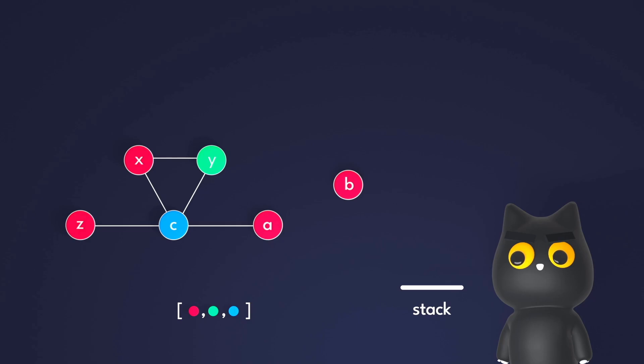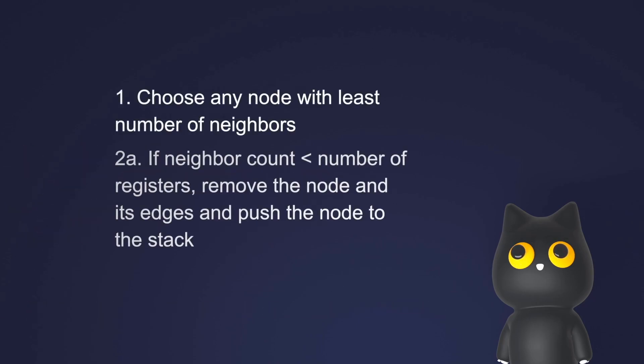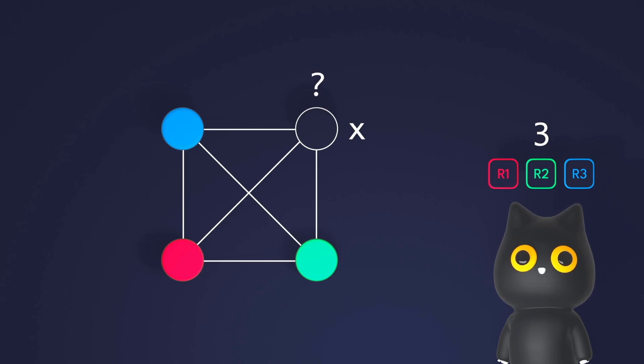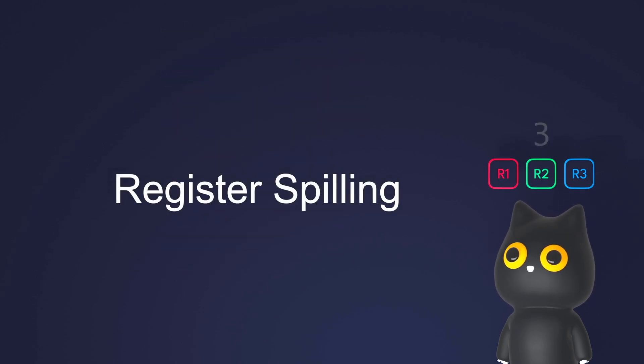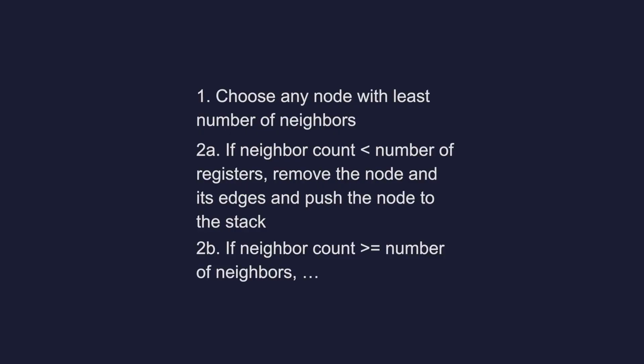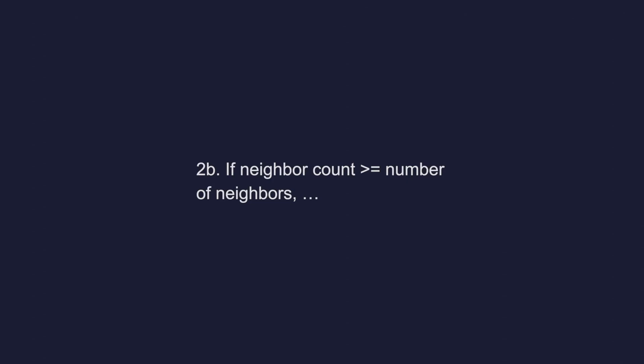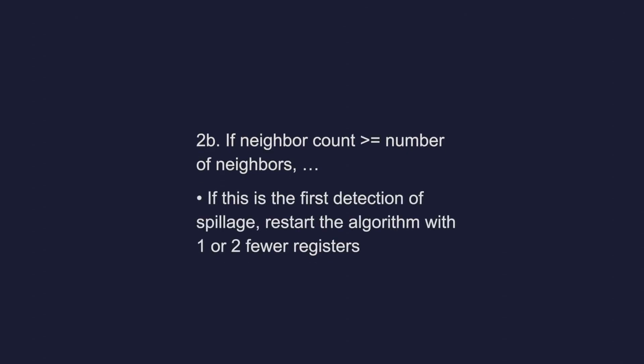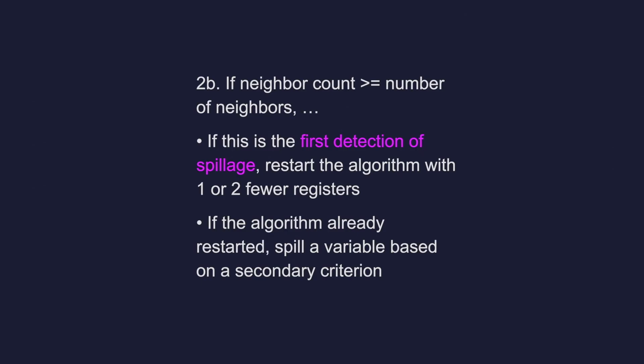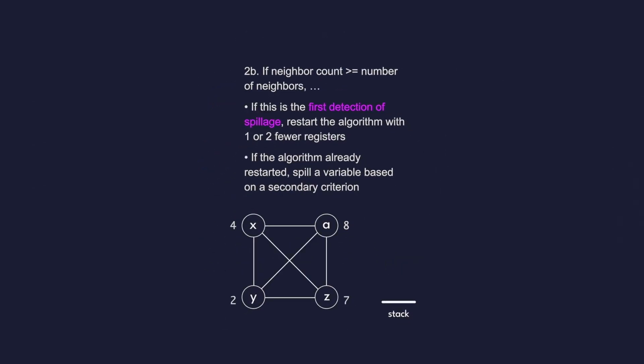However, some of you probably found something suspicious. What happens in the first few steps of the algorithm when we choose a node and the number of neighbors it has is greater or equals to the number of colors available. This means there isn't enough registers to be allocated in the way that no two adjacent nodes have the same color. This is where we need to perform register spilling. We spill over the registers and store the variable in RAM instead, basically like water overflowing. So if we have a node with a neighbor count greater or equal to the number of registers, we restart the algorithm with one or two fewer registers to load spilled variables. The number of registers reduced depends on the instruction set architecture. This is done upon the first detection of spillage. If the algorithm has already been restarted, we choose a variable to spill based on the secondary criterion. This criterion could be something like, spill variables lease access first. Then we remove that node and its edges, but we do not push it to the stack.